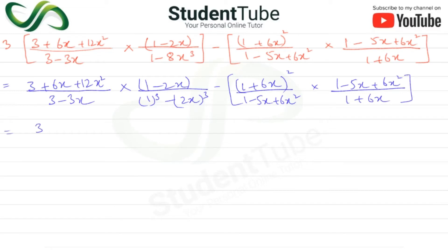Now here we take 3 common. Then we have 1 plus 2x plus 4x squared upon 3.